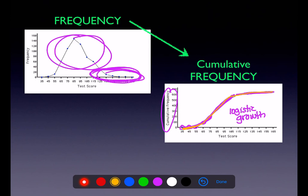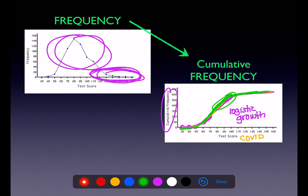When I say logistic growth, I mean something that starts growing small, speeds up, and then levels off. Something we're seeing right now — I'm recording this in May of 2020 — is this is how COVID is spreading. Starting back in February we were here, and then in April and May we really started to climb. I don't know if it levels off in August or if it keeps going through September and October. I do know it will level off; I just don't know when.